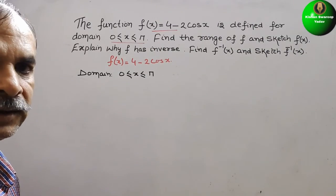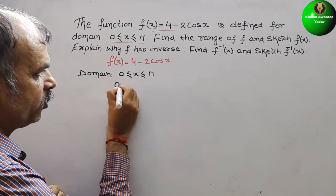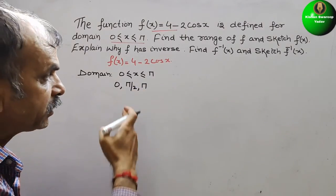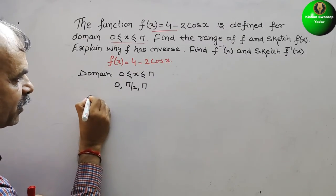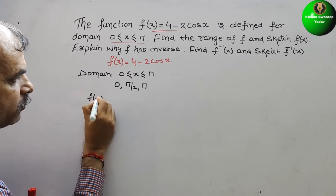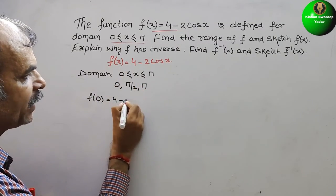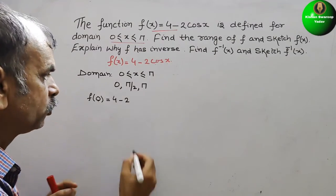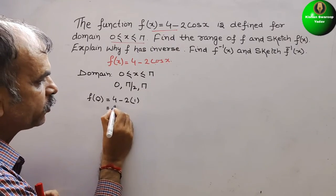We will take only three values: 0, π/2 (that is 90 degrees), and π. Just substitute these values in place of x. When x is 0: f(0) = 4 - 2·cos(0) = 4 - 2·1 = 2.